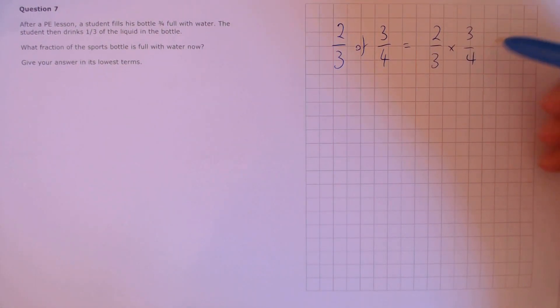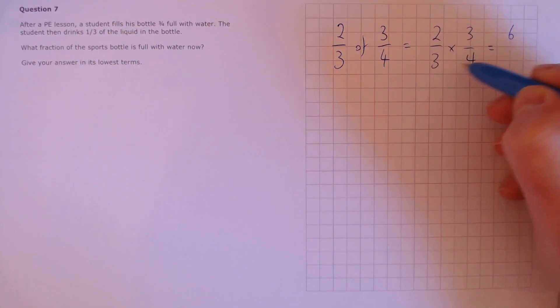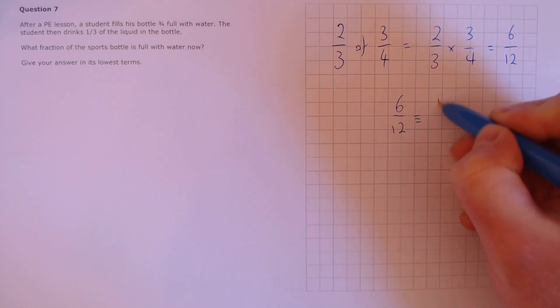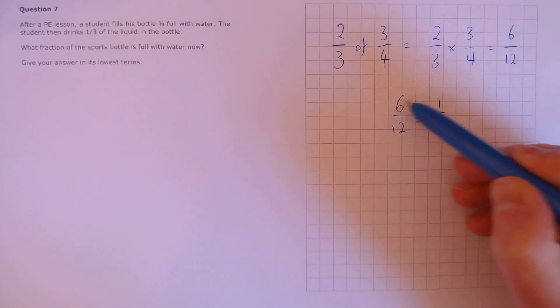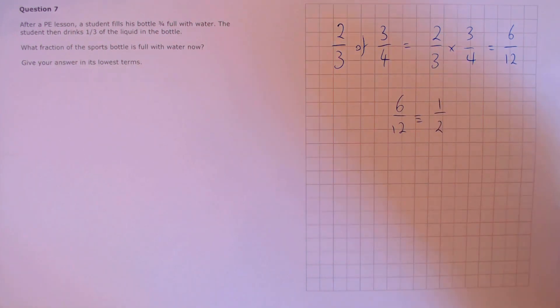If we want to multiply these two quantities together, we can multiply the tops of the fractions, that's 2 times 3, which is 6, and 3 times 4, which is 12 on the bottom. 6 twelfths is equivalent to one half, since we can divide both the top and bottom by 2. So the answer is one half.